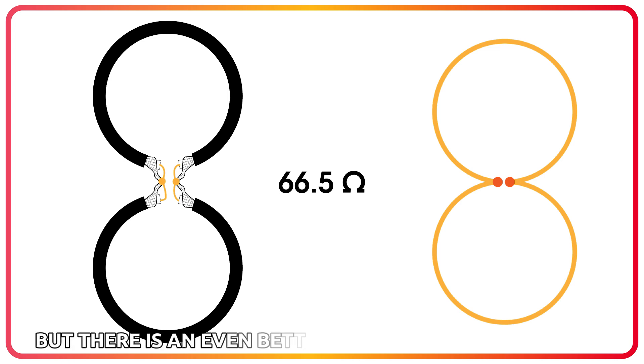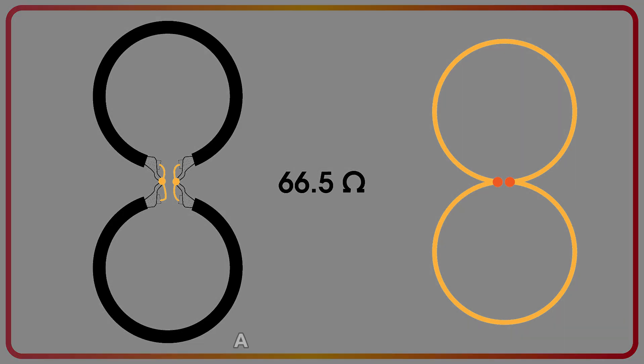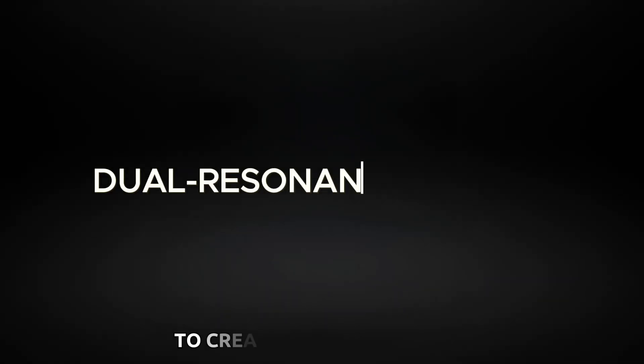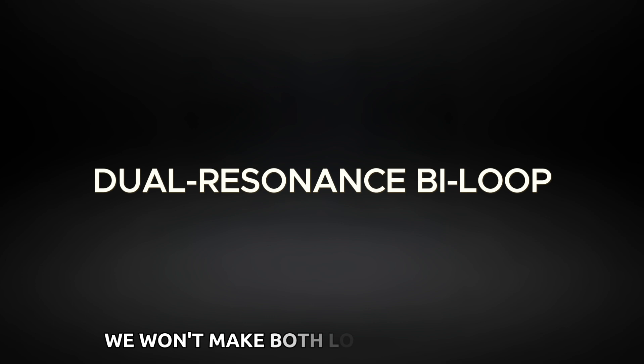But there is an even better option: a dual resonance antenna system. To create such an antenna, we won't make both loops the same size and tune to the same frequency. Instead, we will make them of different sizes.